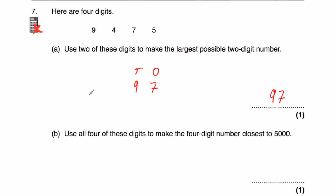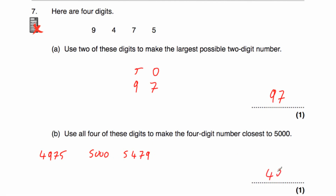Question 7b says use all 4 digits to make a 4-digit number that is closest to 5,000. Let's consider the first number we can make above 5,000 and the first number below 5,000, and see which one's closest. The closest above 5,000 would be 5,479. The closest below would be 4,975. As you can see, 4,975 is only 25 away from 5,000, whereas 5,479 is 479 away. So 4,975 is the answer.